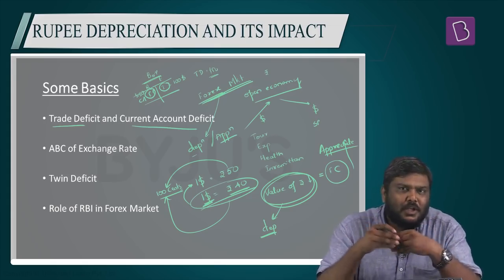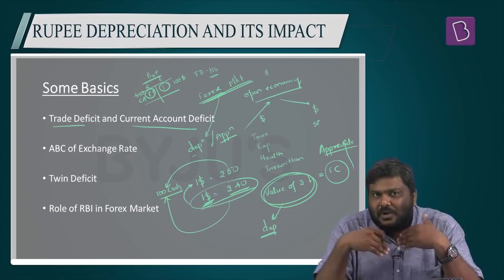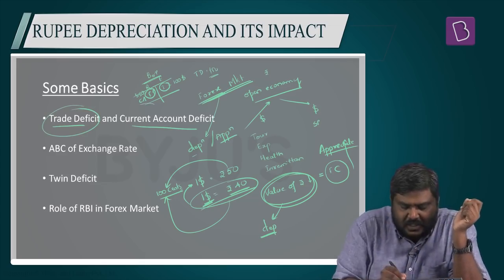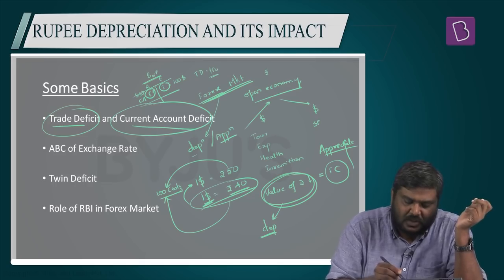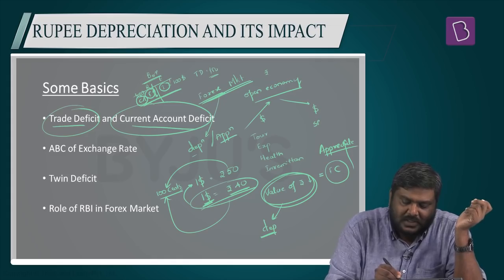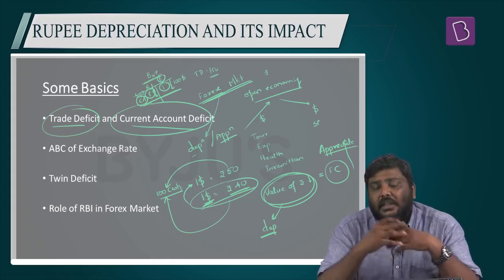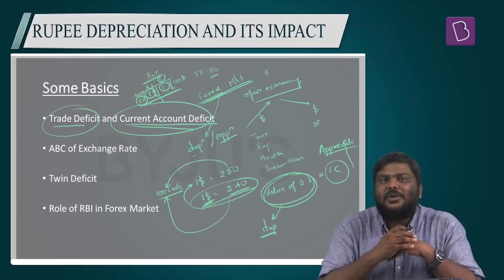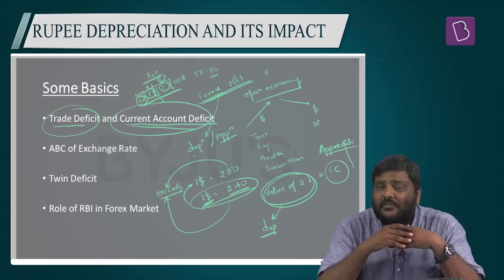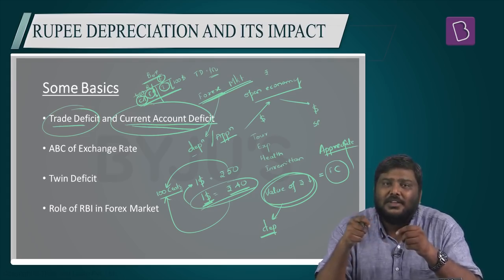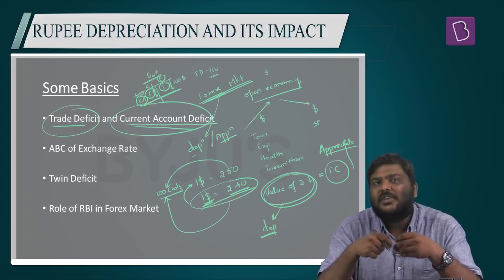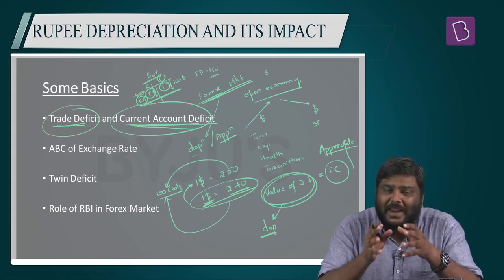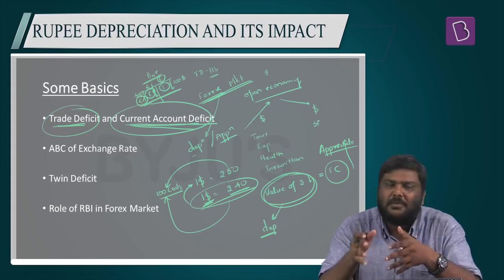And because of this depreciation of rupee, the trade deficit will also expand. Current account deficit means that the expenditure under the current account is higher than the revenue side. Higher the current account deficit, higher the outflow of dollars, and usually rupee will depreciate as a result. In India, trade deficit has ballooned to more than $18 billion, and current account deficit has ballooned to more than 2% of GDP in the last couple of years.